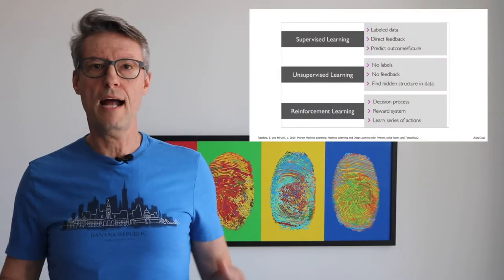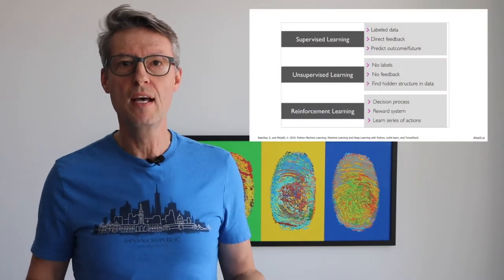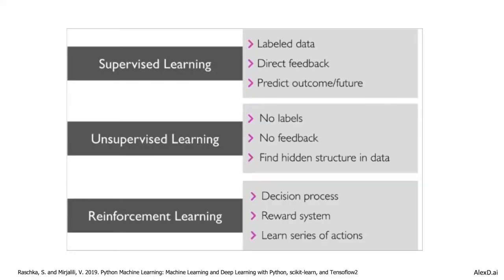The last one, reinforcement learning, is completely different because you don't start with data. You use an intelligent agent to interact with the environment, and during the interaction it gets some rewards or some penalties to understand whether it is going in the right direction or the wrong direction. It's very interesting to learn a series of different kinds of actions using reinforcement learning.